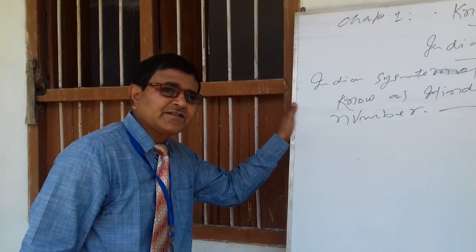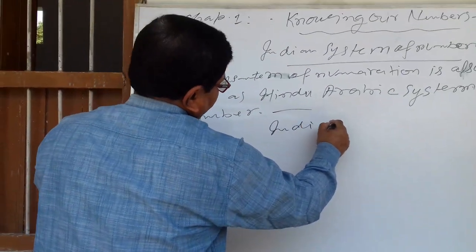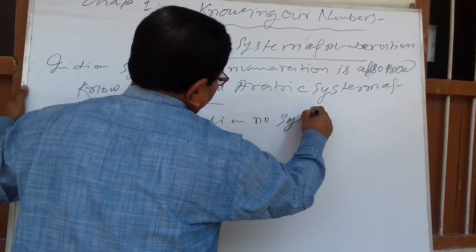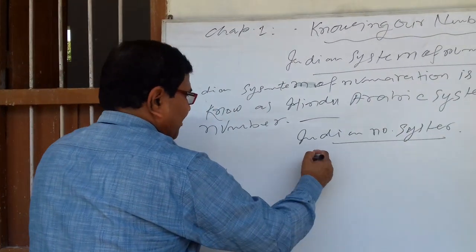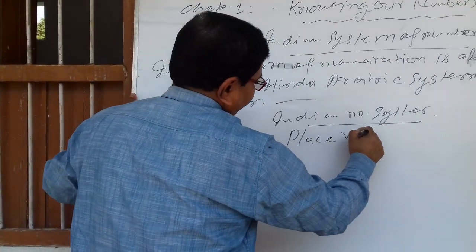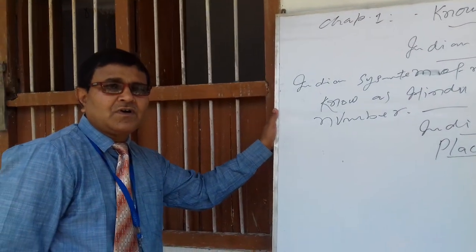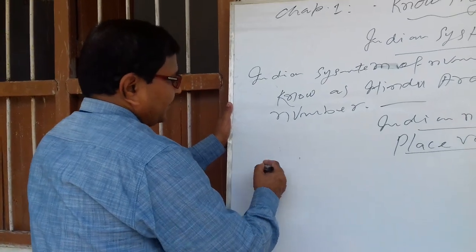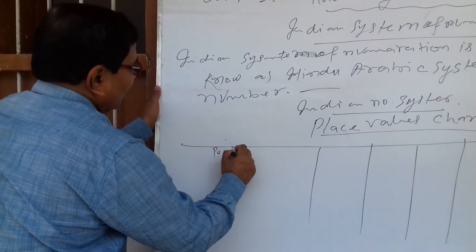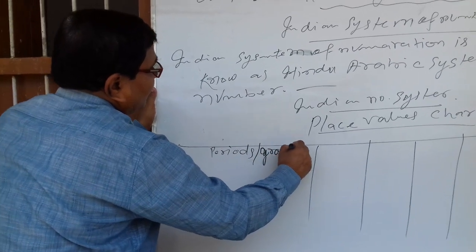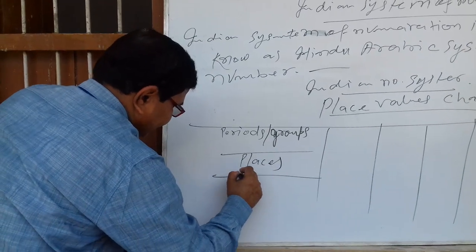In this, we read numbers and place values. In the Indian number system, it is divided into place value charts. The charts are first divided into groups, also called periods or groups. It is divided into periods, groups, and places.